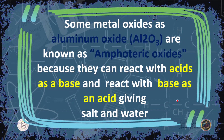Some metal oxides, such as aluminum oxide, are known as amphoteric oxides. Amphoteric means transitional or changing — they can react with an acid acting as a base, and react with a base acting as an acid, in both cases giving salt and water.